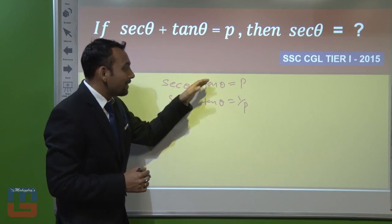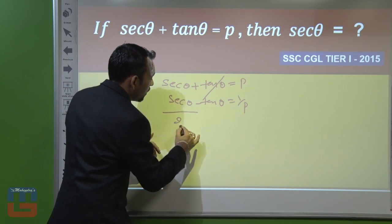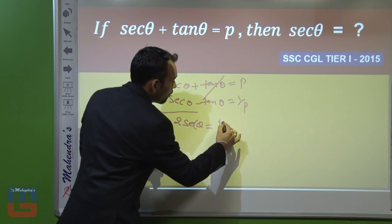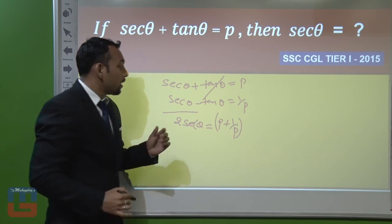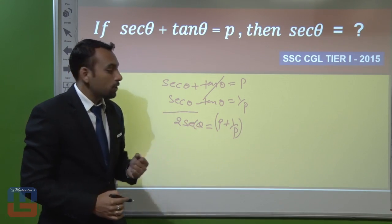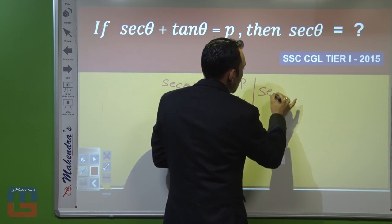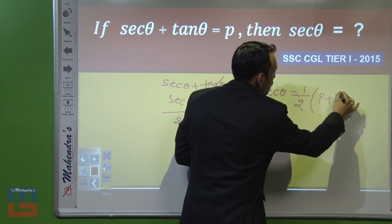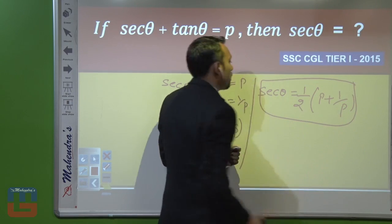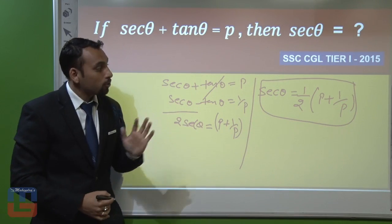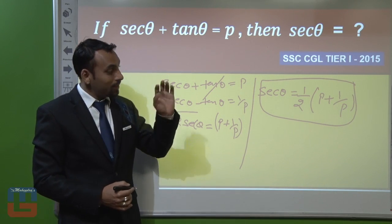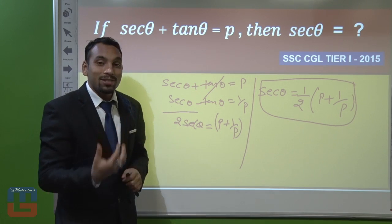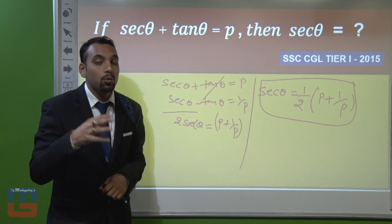To find sec θ, we add the two equations: (sec θ + tan θ) + (sec θ − tan θ) = p + 1/p. This gives 2 sec θ = p + 1/p, so sec θ = ½(p + 1/p). That is the value of sec θ. You have to go into the examination with this solution and match it with the answer options.